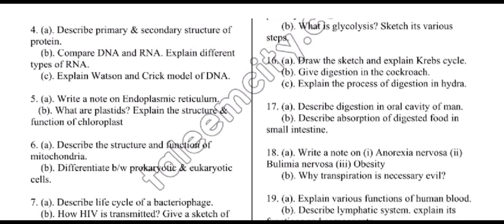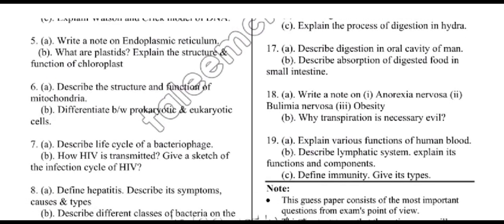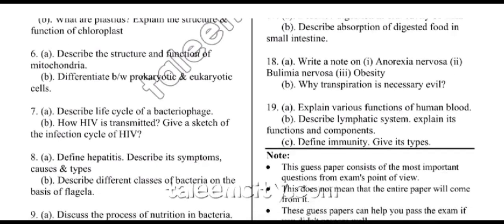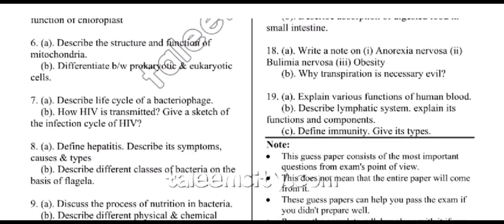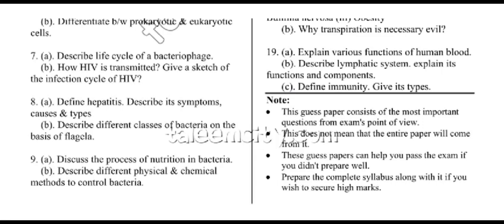Write a note on endoplasmic reticulum; what are plastids — explain the structure and function of chloroplast; describe the structure and function of mitochondria; differentiate between prokaryotic and eukaryotic cells; describe the life cycle of a bacteriophage; how is HIV transmitted — give a sketch of the infection cycle of HIV; define hepatitis and describe its symptoms, causes and types; describe different classes of bacteria on the basis of flagella; discuss the process of nutrition in bacteria; describe different physical and chemical methods to control bacteria.